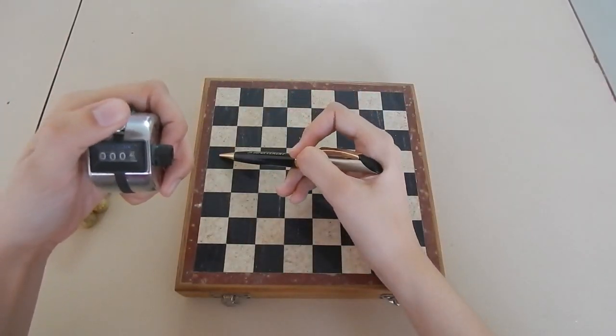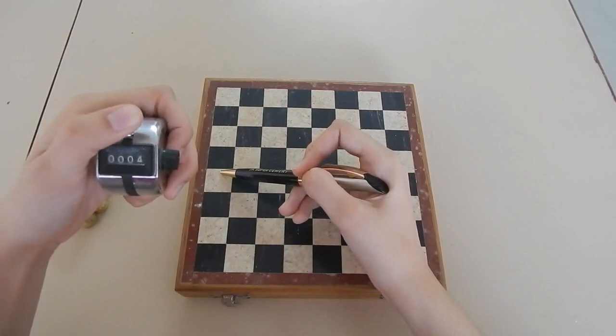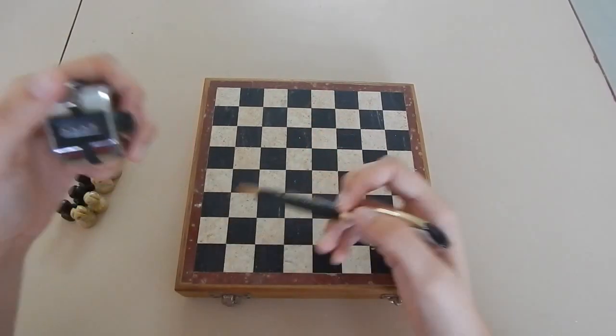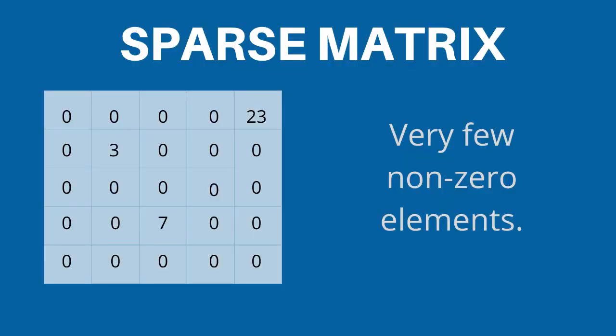There may be a situation in which a matrix contains more zero values than non-zero values. Such a matrix which contains very few non-zero elements is known as a sparse matrix.